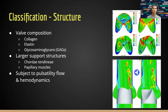When you look at the classification of the structures for these heart valves, you'll notice different compositions such as collagen, elastin, and glycosaminoglycans. This gives the valve its visible elastic properties. Within the heart there are also larger support structures including the chordae tendineae, which attach to the valves to give them more structure, and these also attach to papillary muscles in the ventricles.